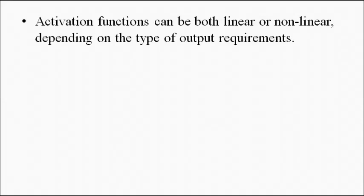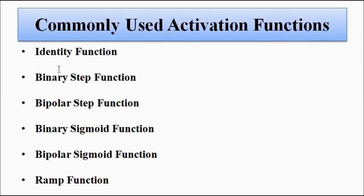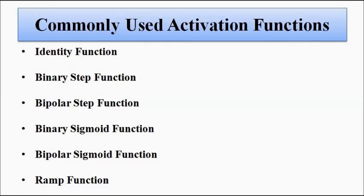The common types of activation functions used are: the identity function, the step function — which includes the binary step function and the bipolar step function — the sigmoidal function, which is of two types: binary sigmoidal and bipolar sigmoidal, and the ramp function. There are other types of functions also, but mostly we will come across these activation functions, which are all mathematical functions with their own representations and graphical representations.